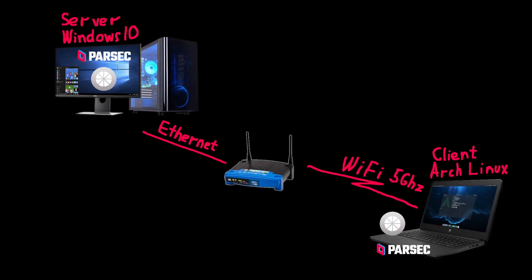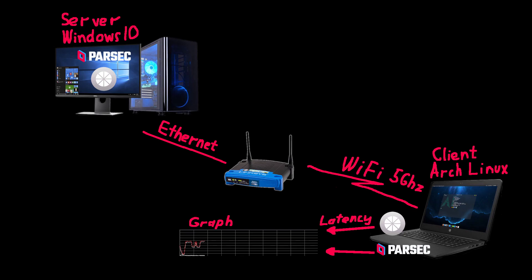Here is how my testing setup looks. The host is running Windows 10 with the Parsec client and NVIDIA GeForce Experience for Moonlight. The PC is connected via Ethernet to the router. The client laptop is running Arch Linux with Moonlight Qt client and Parsec Linux client, connected over 5 GHz Wi-Fi. I also wrote scripts to extract latency values from both clients and a program to display these values as a graph on screen.